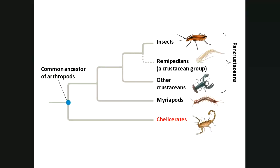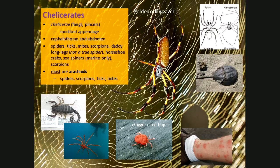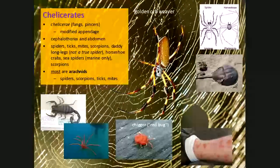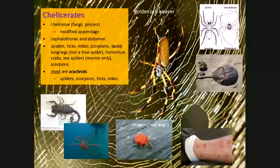Most chelicerates are arachnids — spiders, scorpions, ticks, and mites — but there are other types as well. Why is the daddy longlegs not a true spider? Spiders have two body parts — the prosoma (cephalothorax) and the opisthosoma. Harvestman — the daddy longlegs — only has one body section. So technically by definition, it's not a true spider. Horseshoe crabs are also chelicerates. The golden orb weaver — a garden spider in Florida — is a beautiful orb-weaving spider that spins an orb web and is actually golden in color in the right light.